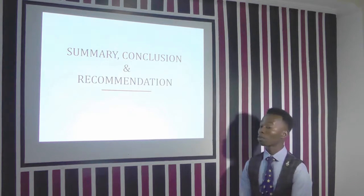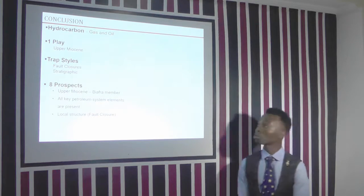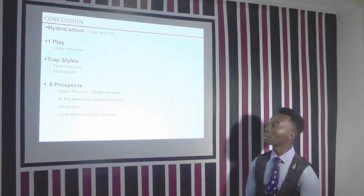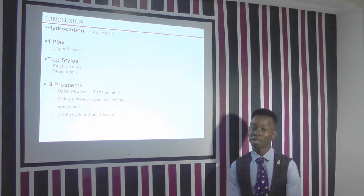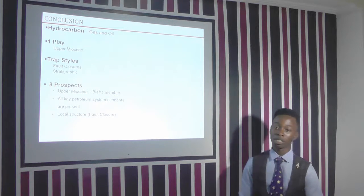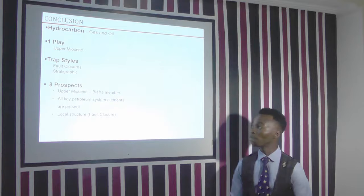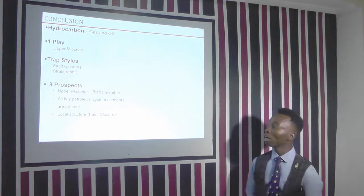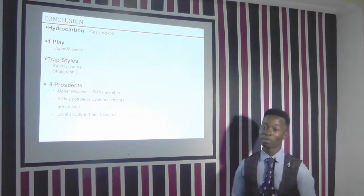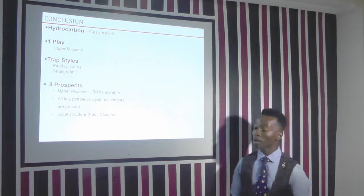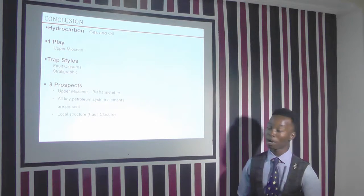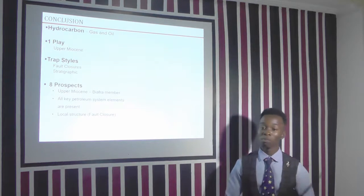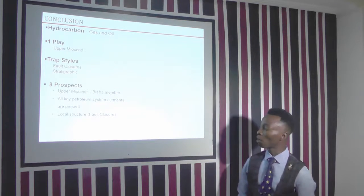In our conclusion, we identified the hydrocarbons to be gas and oil. We identified one play in the study area in the Niger Delta, which is our Biafra sands. The trap styles include fault closures and stratigraphic traps, which are unconformities, the Qua Iboe unconformity, and the shale diapir. We were able to identify eight prospects, all located in the Upper Miocene Biafra member sands, and all key petroleum system elements were available for our prospects.